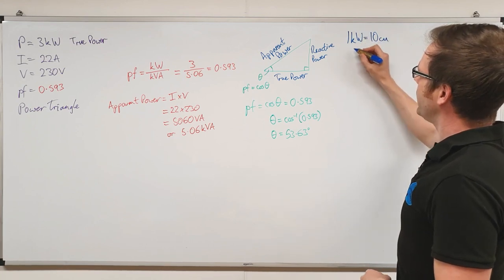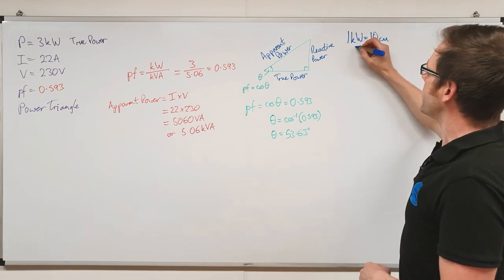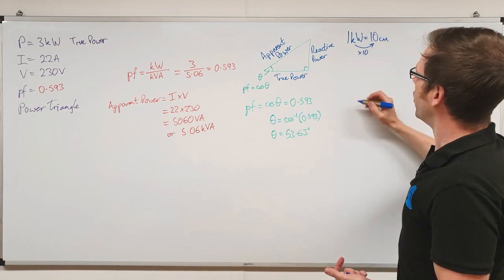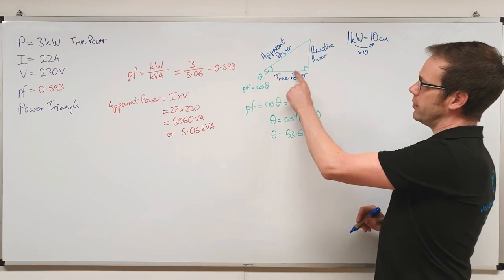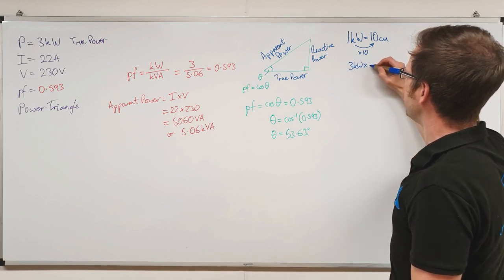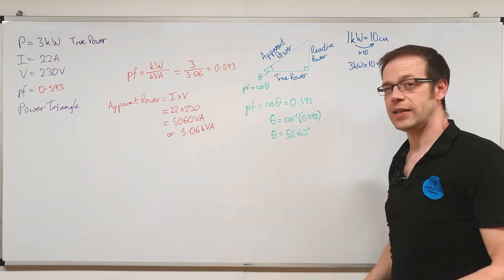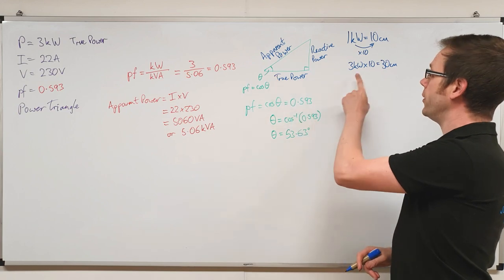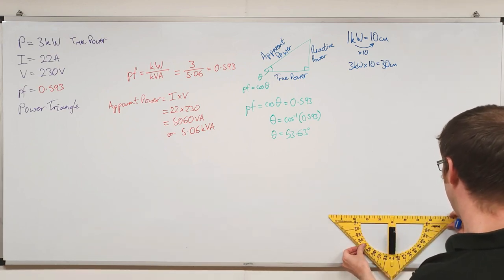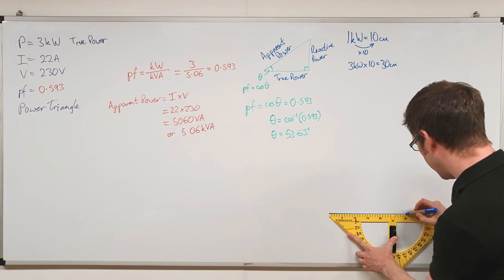So how do we turn our power value into a length value? We look at the scale: how do we get from one to ten? We multiply by ten. So to draw a line representing the true power to scale, we take our true power of three kilowatts and multiply by ten, giving us 30 centimetres. So my line representing the true power will be 30 centimetres long. I'll get the ruler and draw this on the board - the distance from here to there is 30 centimetres. This side represents the true power.